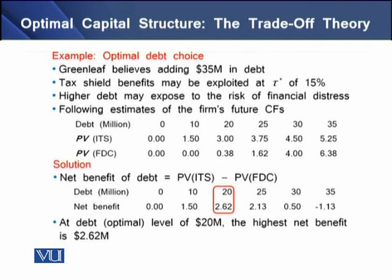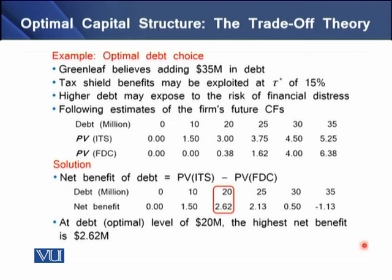To determine the optimal debt level, consider the example of Greenleaf, a company planning to add 35 million dollars as debt in its capital structure. The firm can exploit tax shield benefits at a tax rate of 15 percent, but higher debt also exposes it to financial distress risk. The firm has estimated future cash flows at various debt levels ranging from 0 to 35 million, with corresponding present values of interest tax shields and present values of financial distress cost. To find the net benefit of debt, we deduct the present value of financial distress cost from the present value of the interest tax shield.